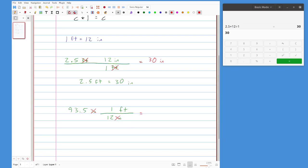So again, I have to take the 93.5 times 1 divided by 12. So over here in my calculator, if I do a 93.5 times 1 divided by 12, that's going to tell me my final answer is 7.7917.